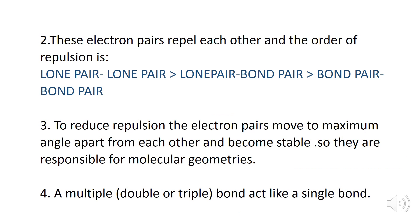These electron pairs repel each other and the order of repulsion is: lone pair-lone pair, then lone pair-bond pair, and there is a minimum repulsion between bond pair-bond pair.